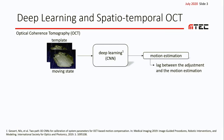For this purpose, optical coherence tomography, short OCT, can be used in combination with deep learning. OCT is an imaging modality with high spatial and temporal resolution and allows for fast volumetric imaging.